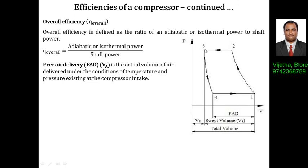When we consider the clearance volume, process 3 to 4 is considered as a polytropic expansion process. After the start of the suction stroke, as the piston moves from TDC towards BDC, the high pressure air trapped in the clearance volume expands until the suction valve opens — that is, when the pressure falls below atmospheric pressure. This is process 3 to 4.